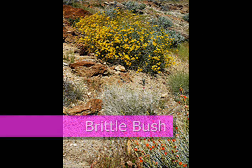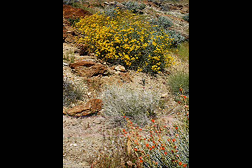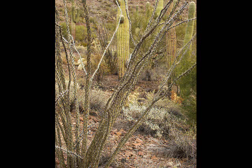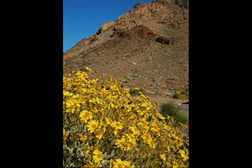The next plant we'd like to mention is the brittle bush. It has hairy leaves which protect it from the heat. This plant is useful because its stems can be made into gum, glue, incense, and medicine. It's fairly tall, so it dominates over most other plants.